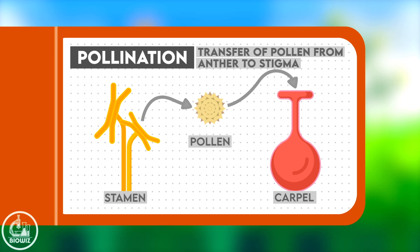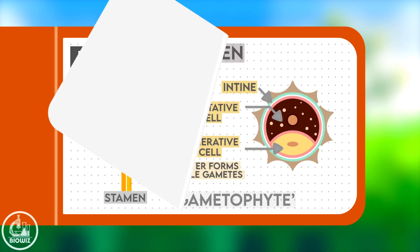Pollination, in simple words, refers to the transfer of pollen from the anther of a stamen to the stigma of a carpel. But there's a lot more to it than just this basic definition.